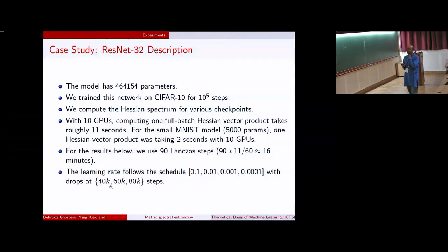We looked at this ResNet-32 CIFAR-10 example, which is actually a state-of-the-art model roughly for CIFAR-10. It has about half a million parameters. We trained this for about 100,000 steps. We compute the spectrum at various checkpoints. At Google, we have access to a lot of resources, but I just wanted to mention that for this particular case, we use only 10 GPUs, not more than that. We compute a full batch Hessian vector product in about 11 seconds, and it takes about 16 minutes to do 90 Lanczos steps. So one checkpoint, we can compute the entire spectrum in about 16 minutes. And this is the training schedule that we used for our approach.